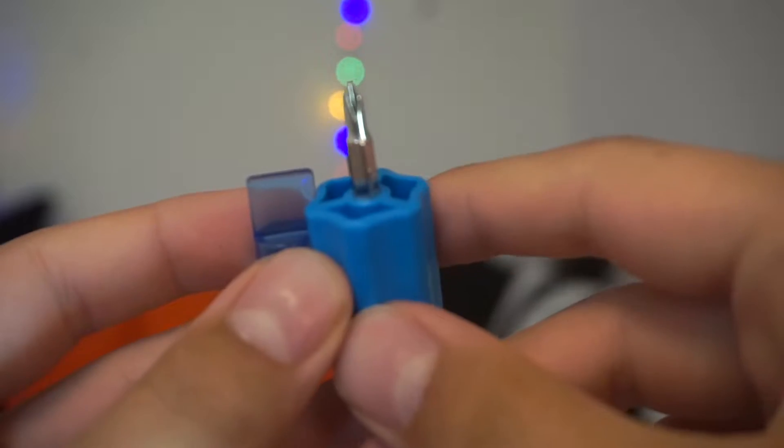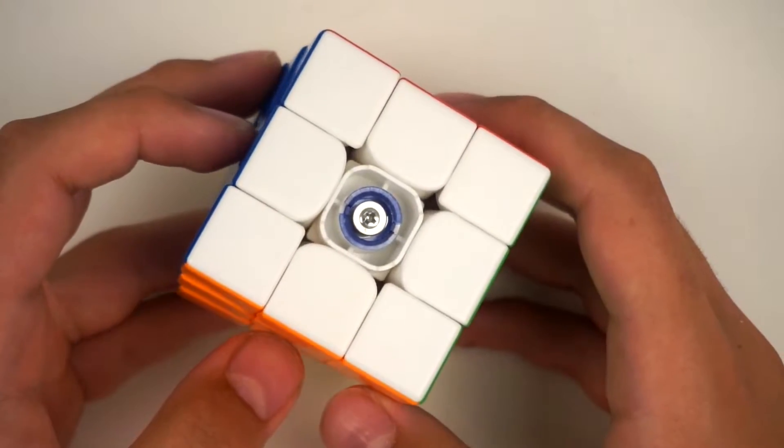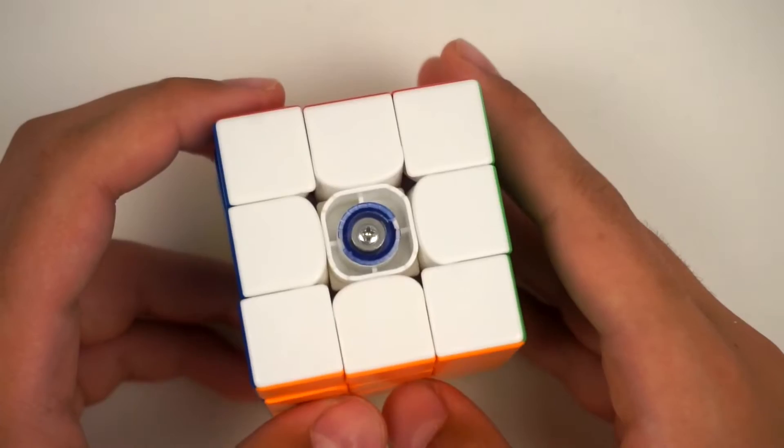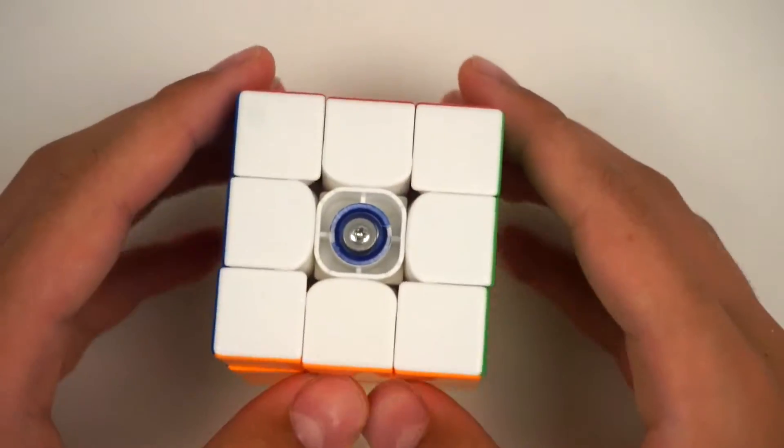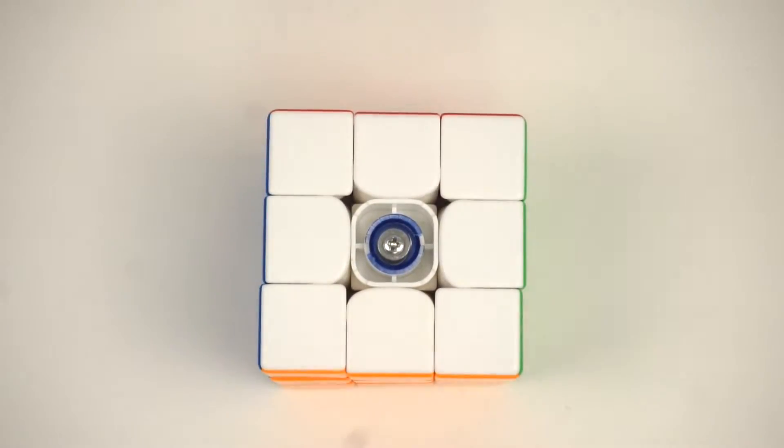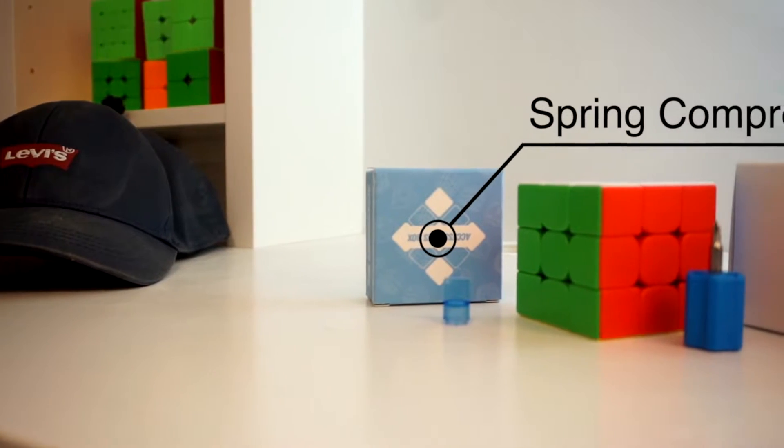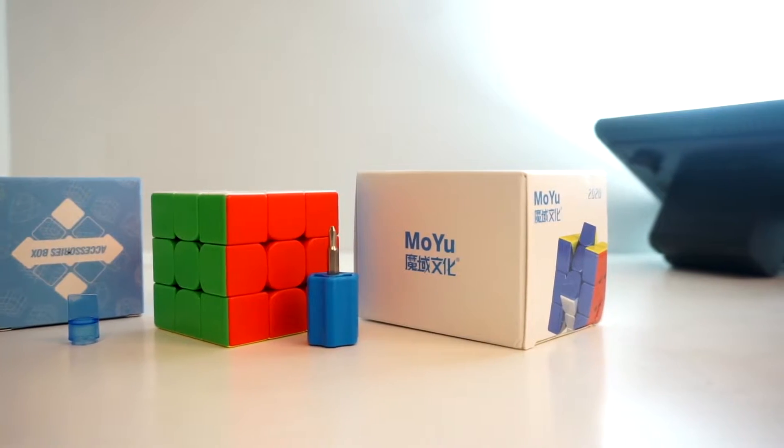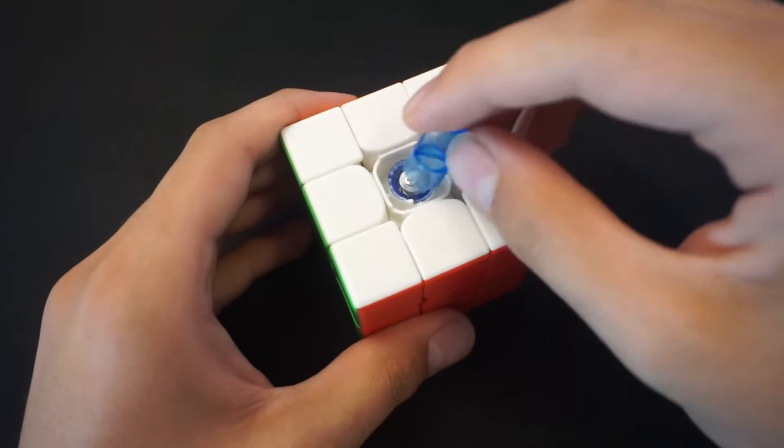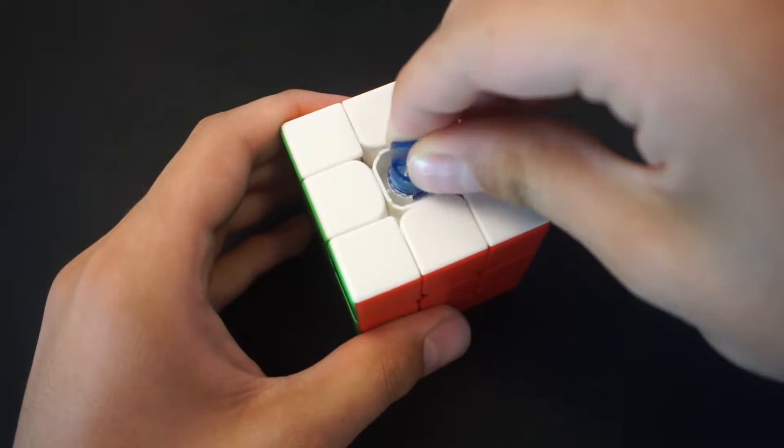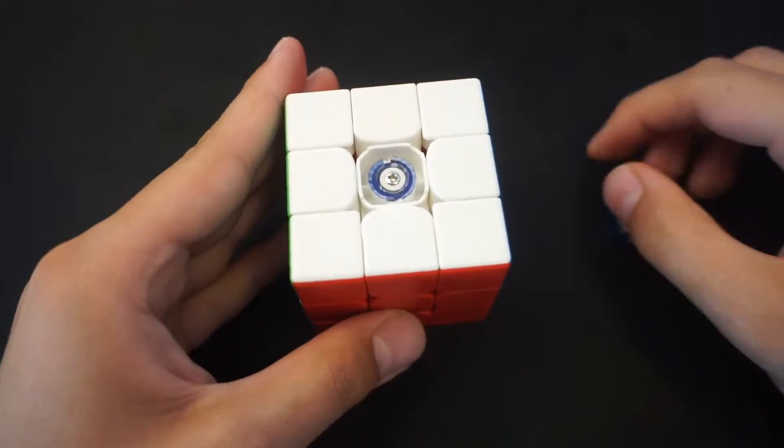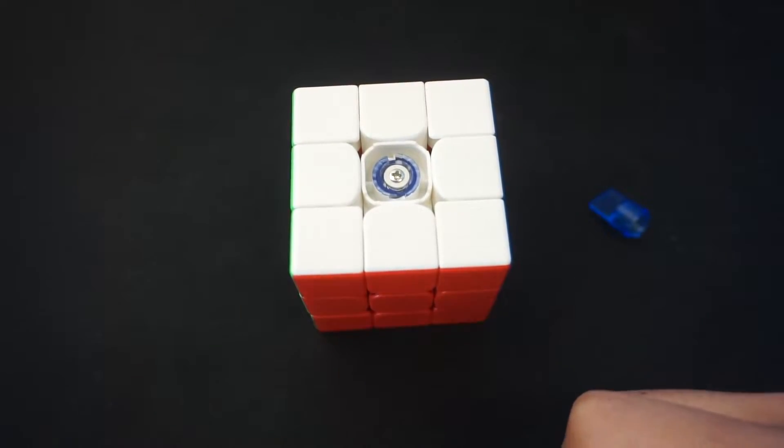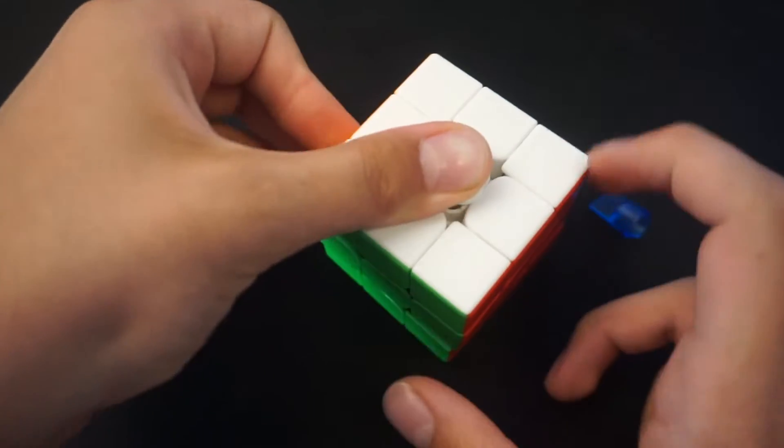Speaking of blue pieces and tensioning tools, this is to my knowledge the only budget 3x3 or even only 3x3 under $20 that includes a real customization feature. It comes with a standard version of the spring compression system that we've seen before in Moya flagships such as the WRM. In short, you can use the included tool to turn the blue piece and the higher it is, the more stable the cube is and vice versa. I'll link JPerm's video below where he goes in depth of how it all works.